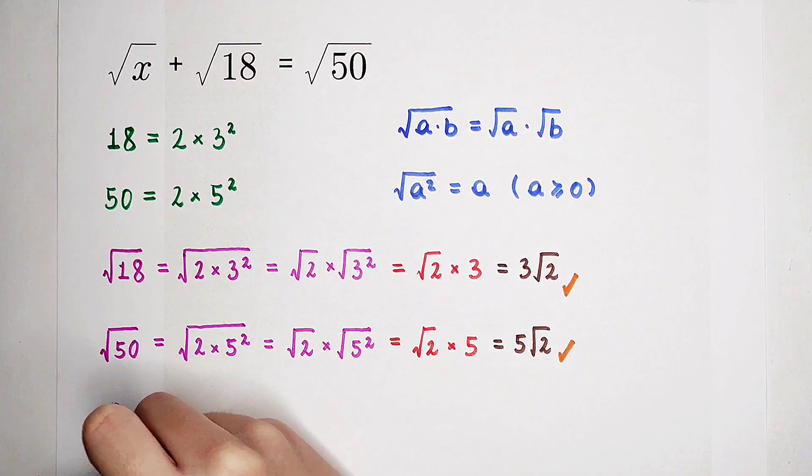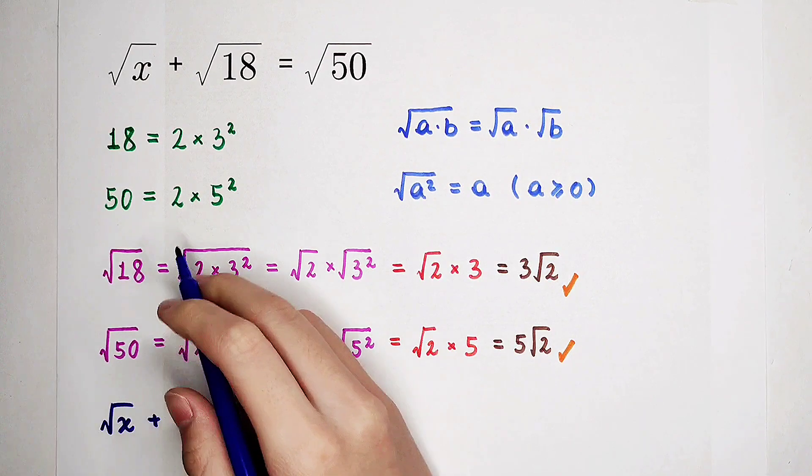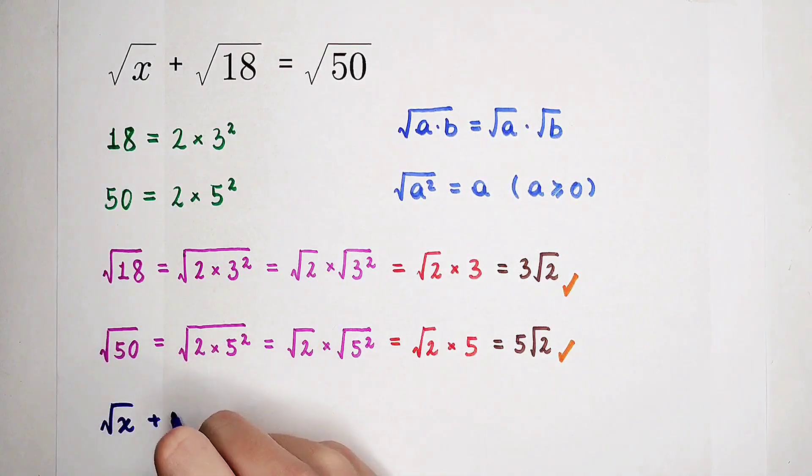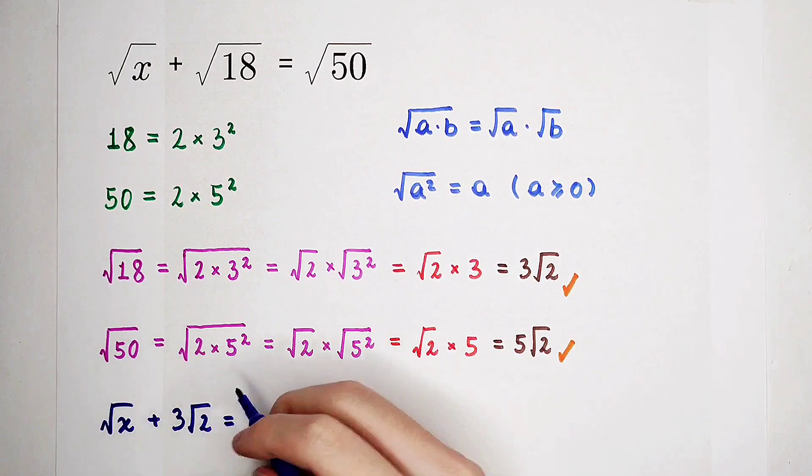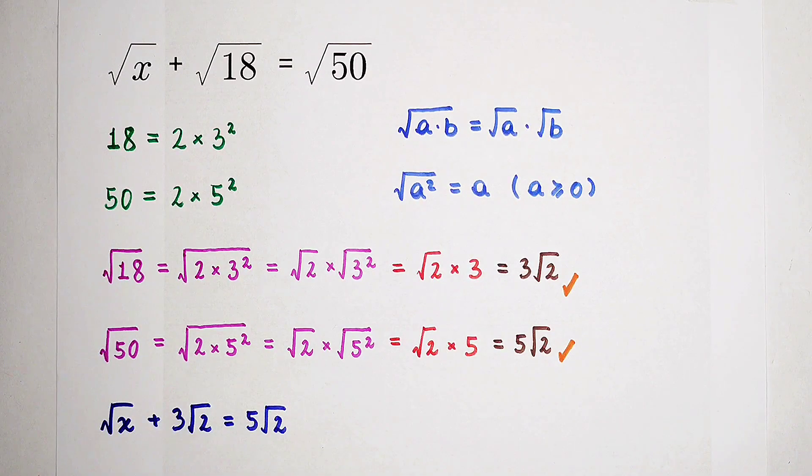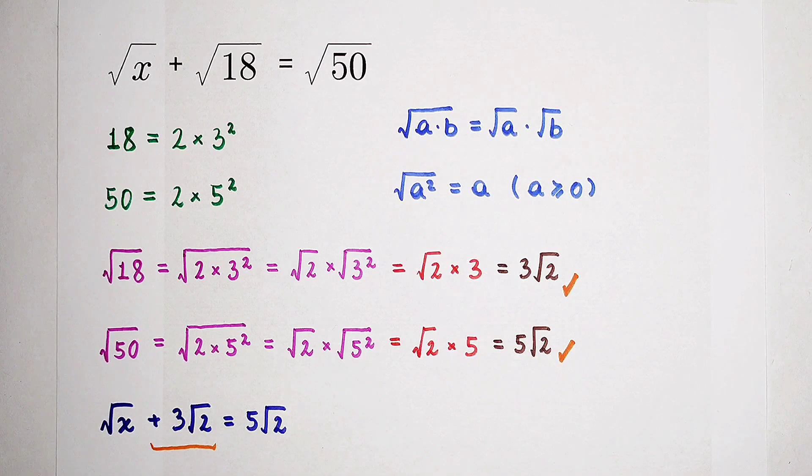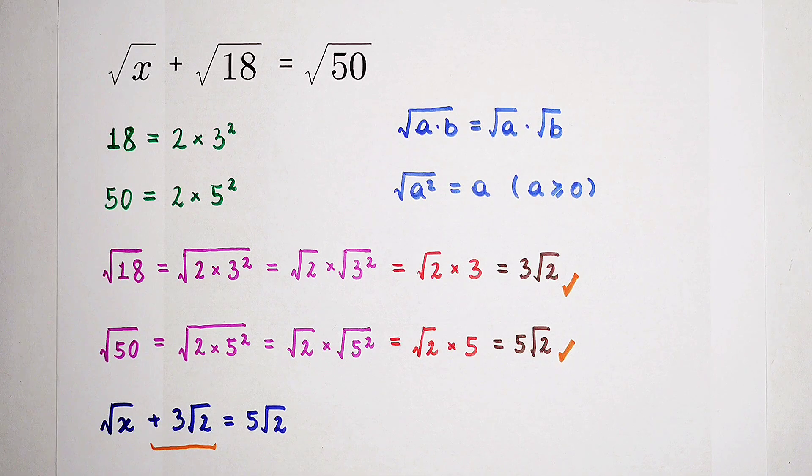So it is square root of x plus square root of 18 is 3 times square root of 2. And it equals 5 root of 2. Subtract it from both sides. And the left side is just root of x.